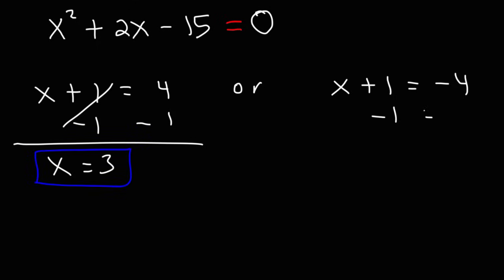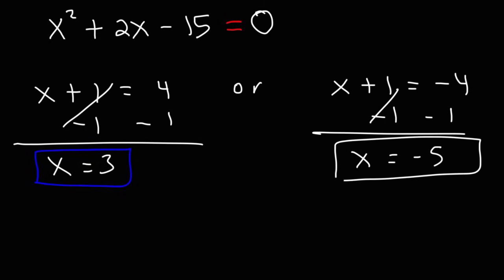For the second one, we need to do the same thing — subtract 1 from both sides. Negative 4 minus 1 is negative 5. So these are the two answers: x is equal to 3 and x is equal to negative 5.